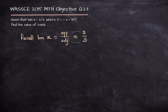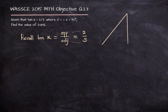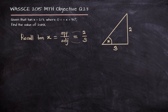If we recall that tan x is opposite over adjacent, we can see that our opposite is 2 and the adjacent is 3. And if we draw that in our triangle, opposite is 2 and the adjacent is 3. We can easily find the hypotenuse from Pythagoras' theorem.